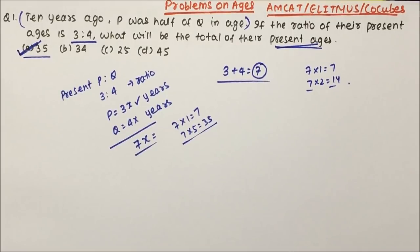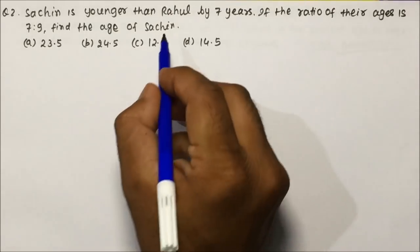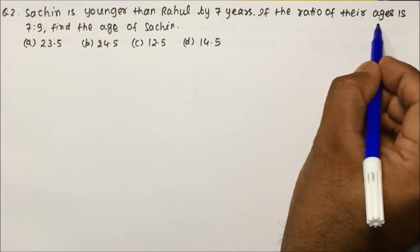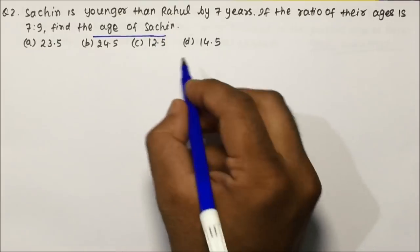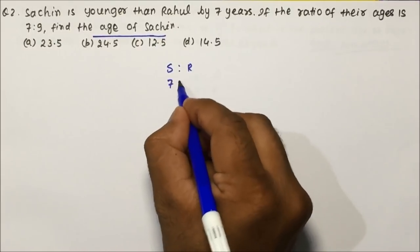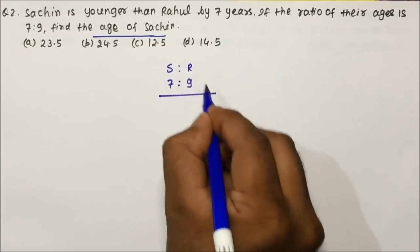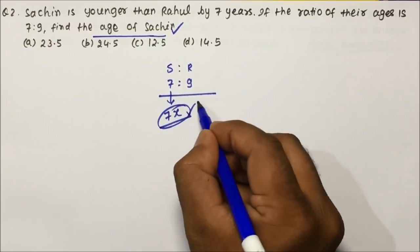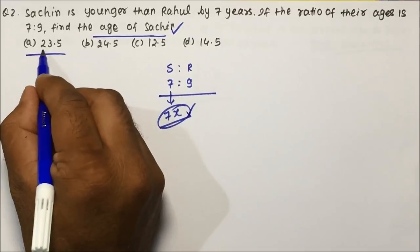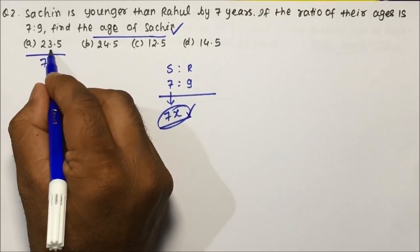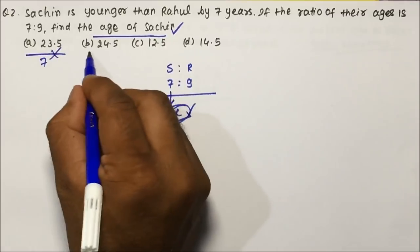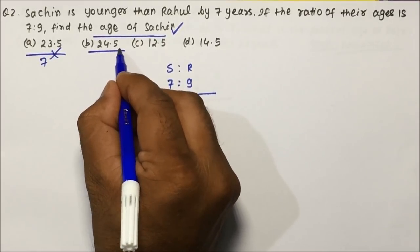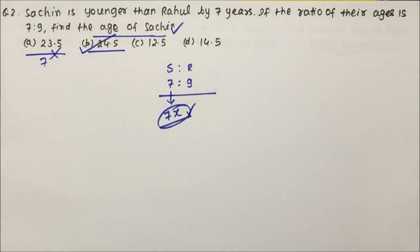Let us move to question number 2. Sachin is younger than Rahul by 7 years. If the ratio of their ages is 7 is to 9, find the age of Sachin. Since the Sachin and Rahul age ratio is 7 is to 9, the age of Sachin will be a factor of 7. Option A is not divisible by 7. Option B — 7 into 5 is 35 — so option B is the correct answer. Just by seeing, we can find which option is divisible by 7.